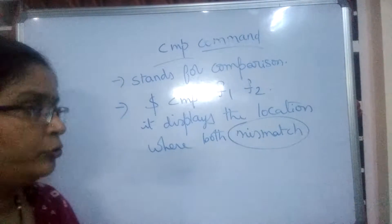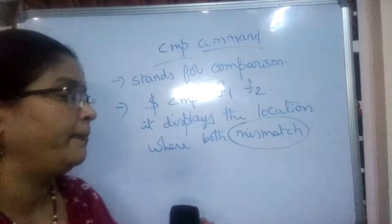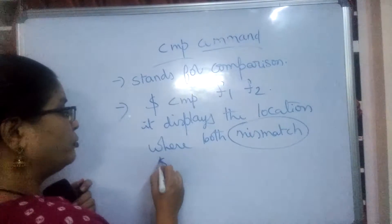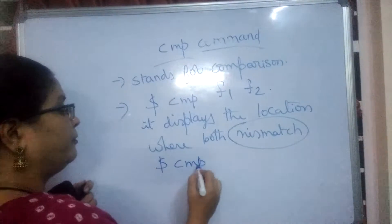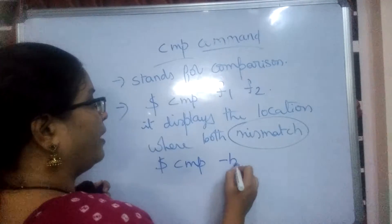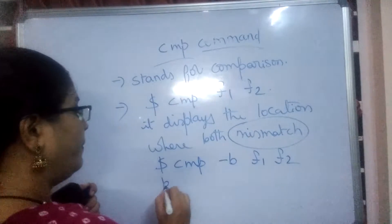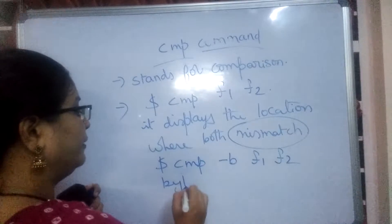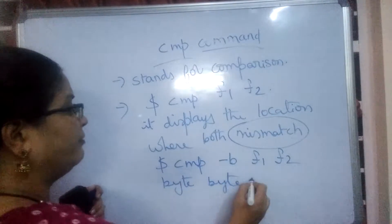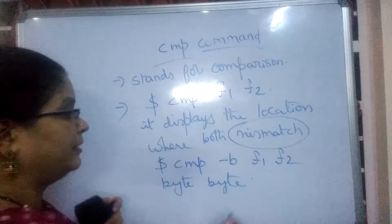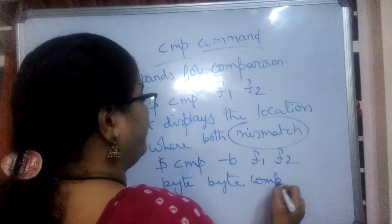It compares the files byte by byte. Some more options are also there with CMP. The first option is CMP hyphen B, F1, F2. Byte by byte it is comparing for each and every line, each and every word — that is hyphen B.